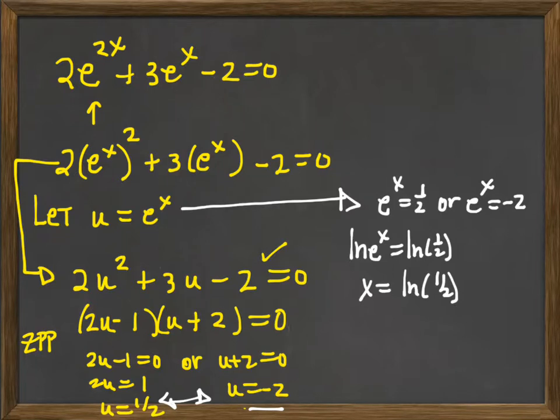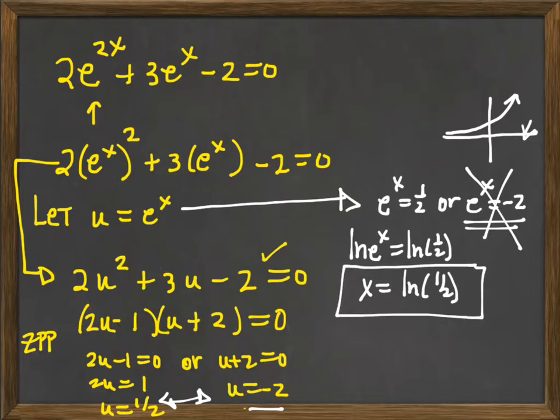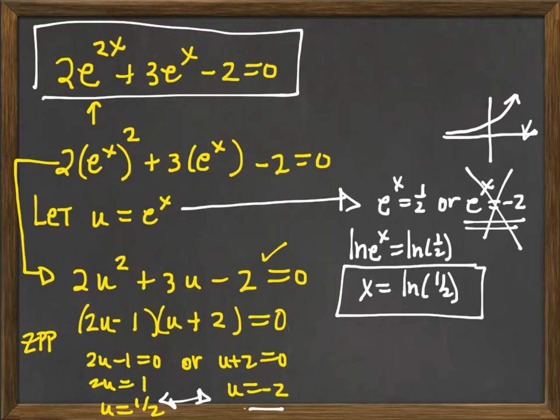Now I need to solve the other one but I pause because I have a mental picture of the exponential function e to the x and I remember that it never crosses the x-axis, that is because it's never negative. So there is no x value that satisfies that equation. So x equals the natural log of one half is my one and only solution to this problem which I solved by first converting it to a quadratic using a substitution and then proceeding in a more familiar way.